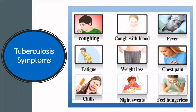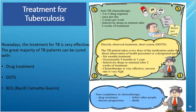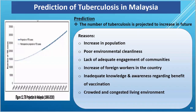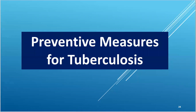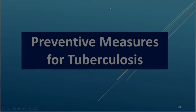A person who falls ill with TB will have these symptoms. Nowadays, the treatment for TB is very effective. TB patients can be cured with drug treatment, DOTS, and BCG. The number of tuberculosis cases is projected to increase in the future. The main reasons are the increase in population and the increase of foreign workers in the country. Here are the preventive measures that can be taken for TB in our own country.